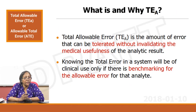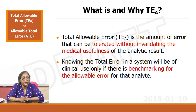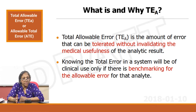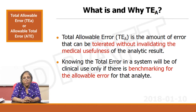What and why is total allowable error? In abbreviation it is called TEa, with T, E, and A. The total allowable error TEa is the amount of error that can be tolerated without invalidating the medical usefulness of the analytical result. Knowing the total error in a system will be of clinical use only if there is benchmarking for the allowable error of that analyte. Beyond that number, the clinical usefulness of your report is limited.